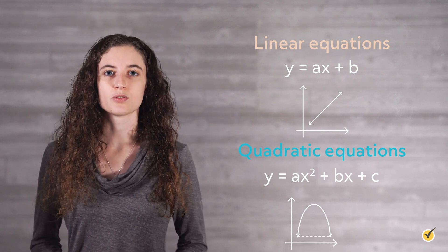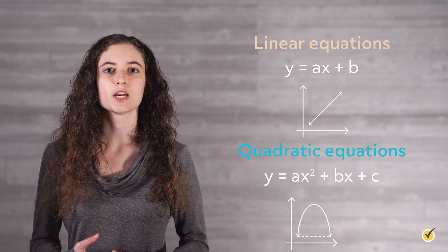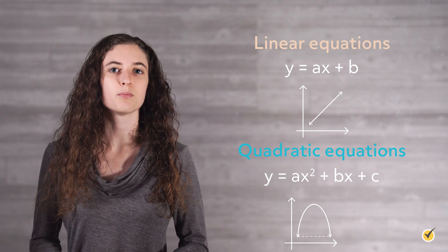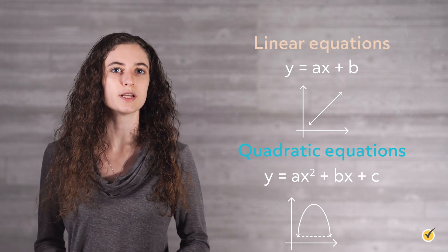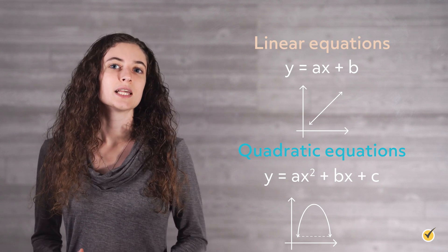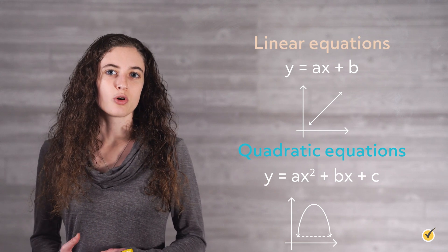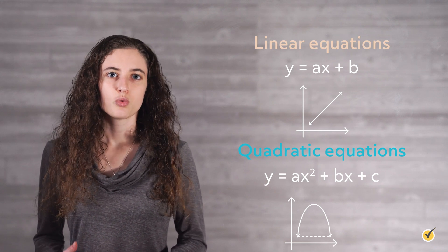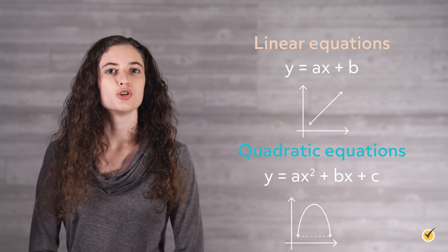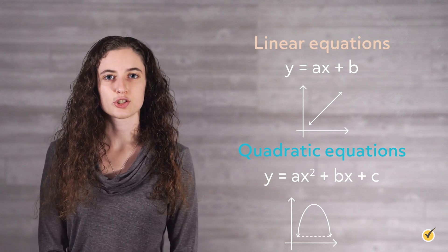When we solve systems of equations, we are taking two or more equations and finding the point or points where they intersect. When we have a linear equation and a quadratic equation, we will have 0, 1, or 2 points of intersection.